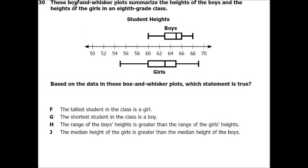Alright, this one says, these box and whisker plots summarize the height of boys and the height of girls in 8th grade. Based on the data in the box and whisker plots, which statement is true? So the tallest student in the class is a girl. So your upper extreme represents your highest one. So in this case, there's your tallest girl. There's your tallest boy. So your tallest is a girl. So that's probably right. But let's go through the other ones. It says the shortest student is a boy. Here's your shortest student. Here's your shortest girl. So that's not true.